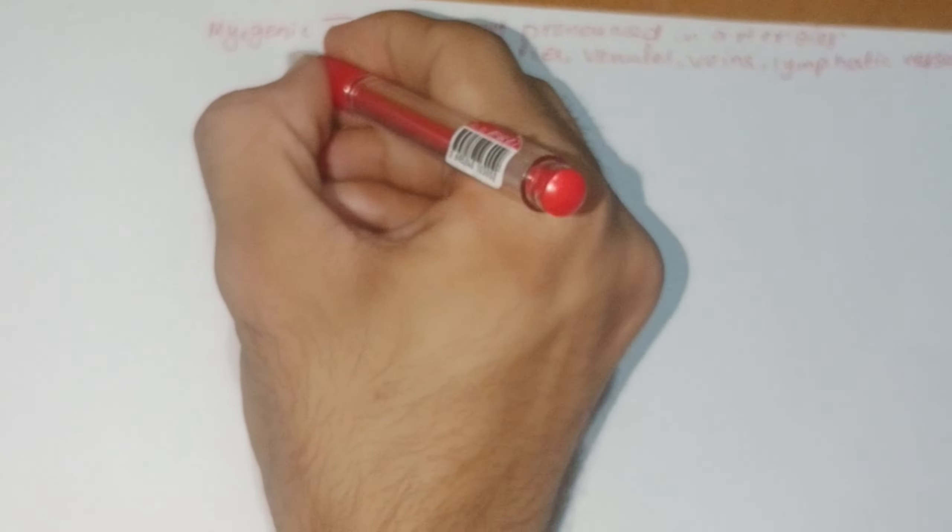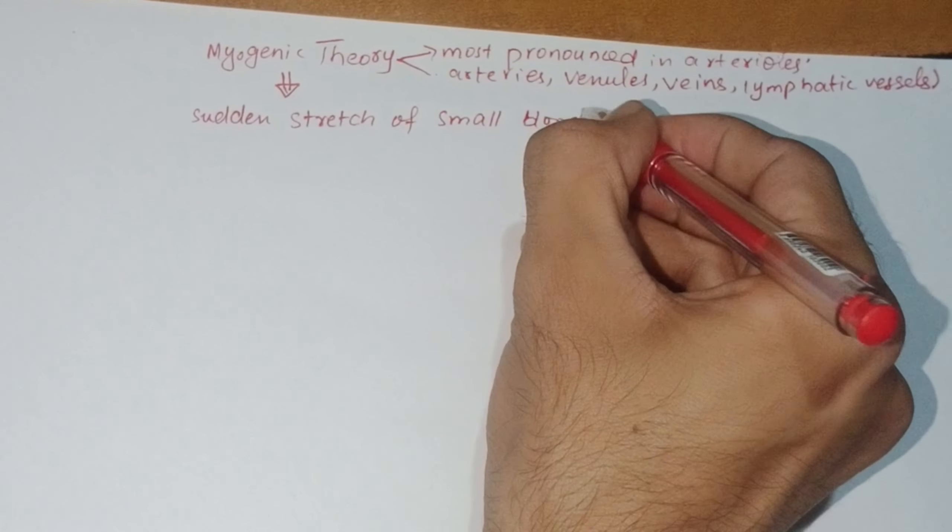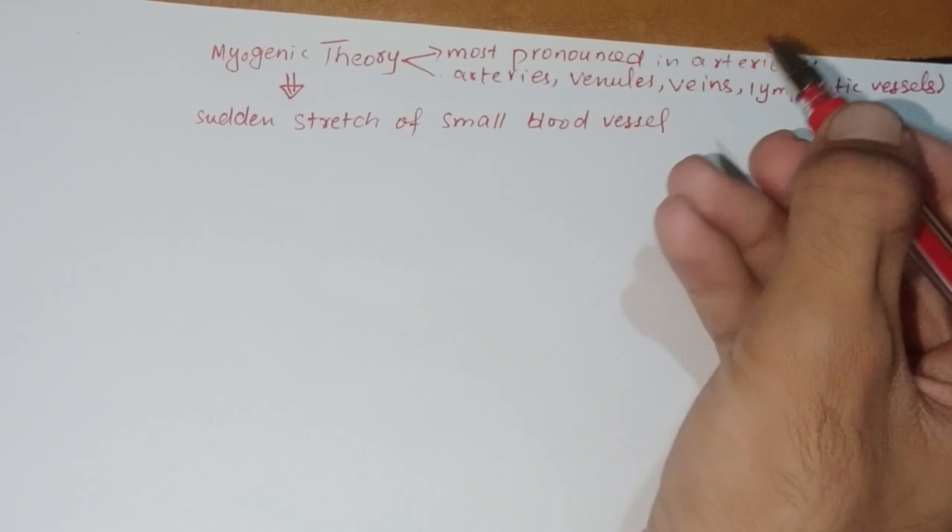The main mechanism: sudden stretch of a small blood vessel causes the smooth muscle of the vessel wall to contract. There are two cases.